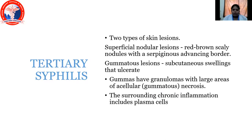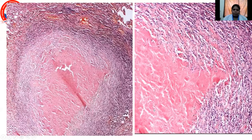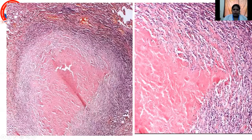Coming to tertiary syphilis, there are two types of lesions: superficial nodular lesions and gummatous lesions. Superficial nodular lesions are red-brown scaly nodules with a serpiginous advancing border, and gummatous lesions are subcutaneous swellings that ulcerate. There is a granuloma with large areas of acellular necrosis and surrounding chronic inflammation that includes plasma cells. This picture shows acellular necrosis surrounded by chronic inflammatory cell infiltrate.